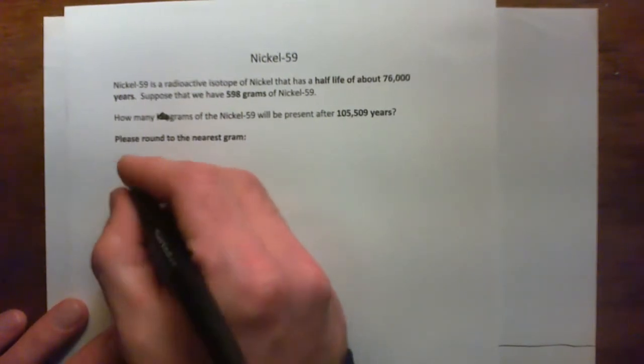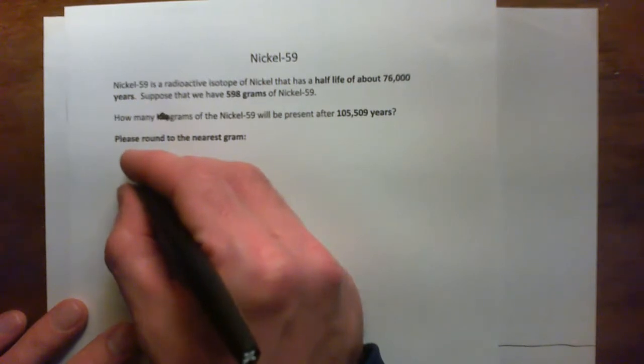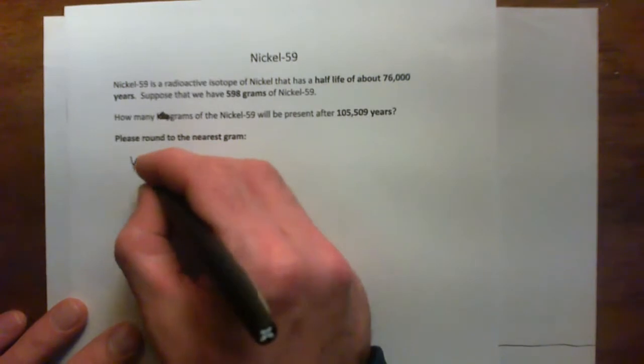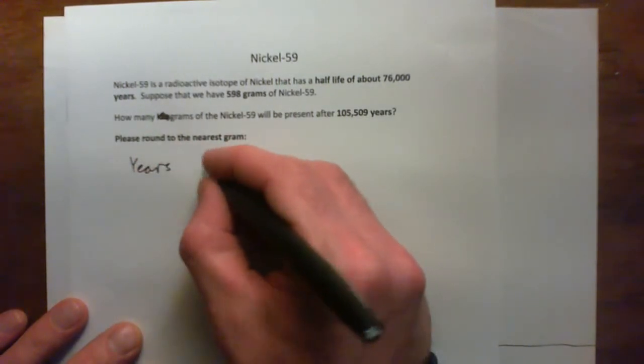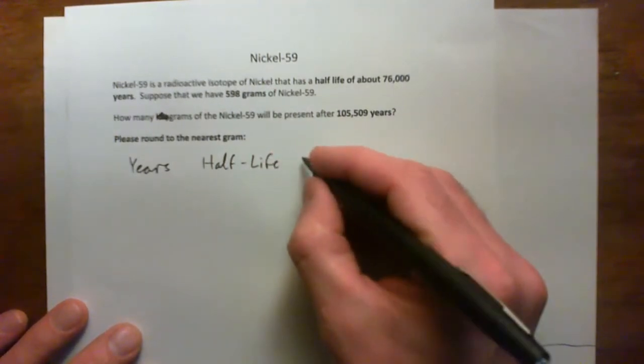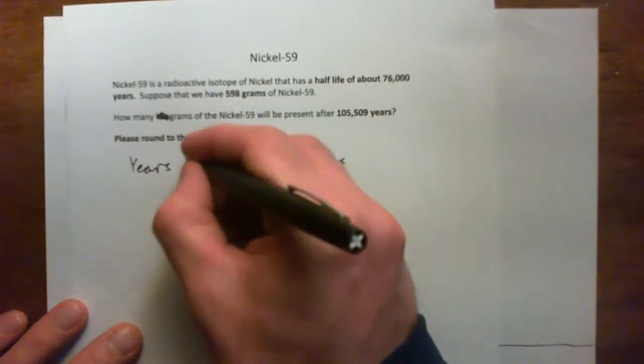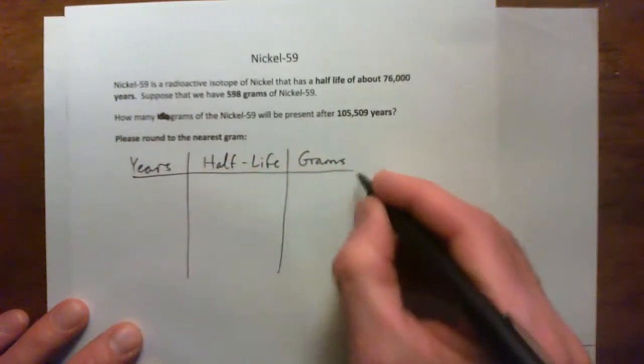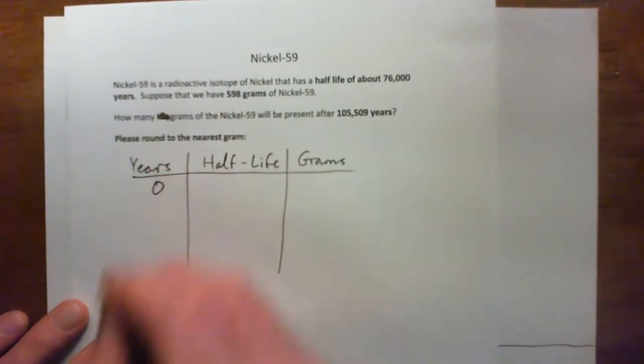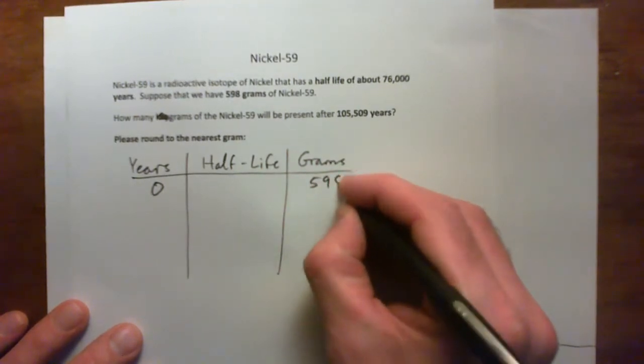So basically what we're looking at is kind of years, and how many half-lives that is, and then how much of the substance we have left in grams, the grams remaining. So it's kind of like we've got three columns. So initially, now, we have 598 grams, right?